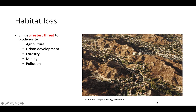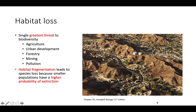This results in something called habitat fragmentation, which we'll discuss more extensively in another video. Briefly, it involves taking a large habitat and breaking it into smaller pieces. When you do that, you're also breaking up what was one large population into several smaller populations, and that becomes dangerous for biodiversity because smaller populations tend to have a higher probability of extinction than large populations.